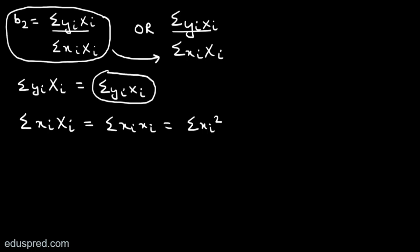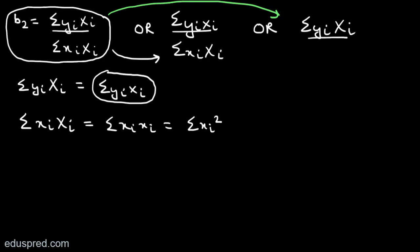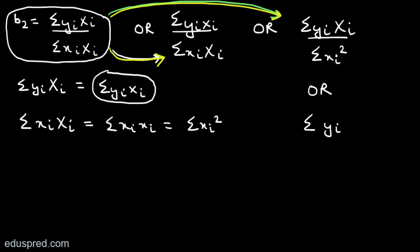Similarly, I can write other versions of the formula as well. From this formula I can go to one more formula where I keep the numerator the same — summation small yi multiplied by capital Xi — and change the expression for the denominator. In the denominator I can write summation small xi squared. Then I can write one more version where I change the expressions for both the numerator and the denominator. So the fourth version could be summation small yi small xi divided by summation small xi squared.